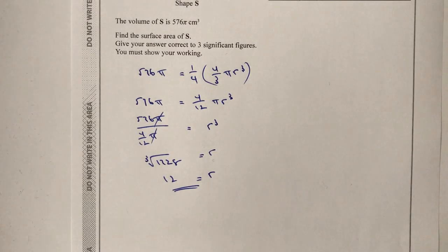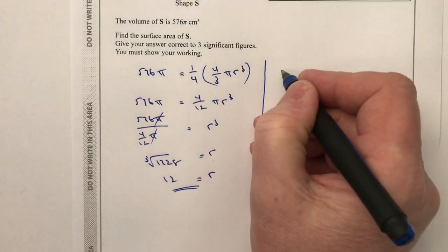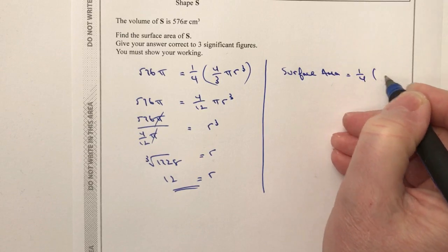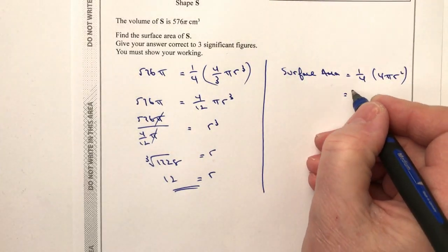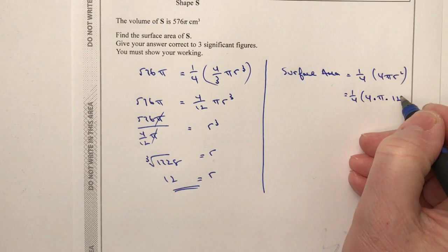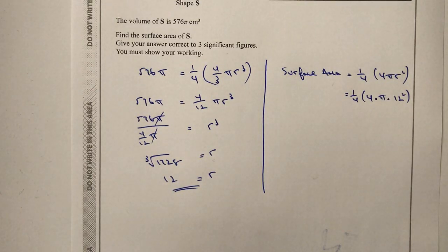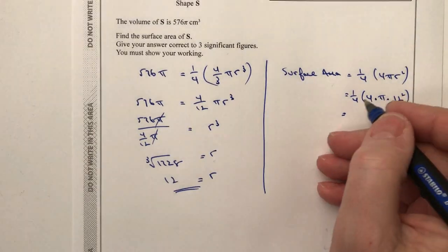Then it's just a case of putting that into the surface area formula. Remember again that we're only looking at a quarter of a sphere. So the surface area is going to be a quarter of 4π r². Putting that in: a quarter times 4 times π times 12 squared. That gives me 144π — the quarter and the 4 cancel each other out.